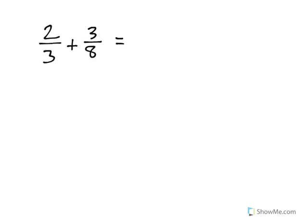We're going to look at how to add two fractions with unlike denominators together. The first thing that we need to do is we need to find a common denominator.